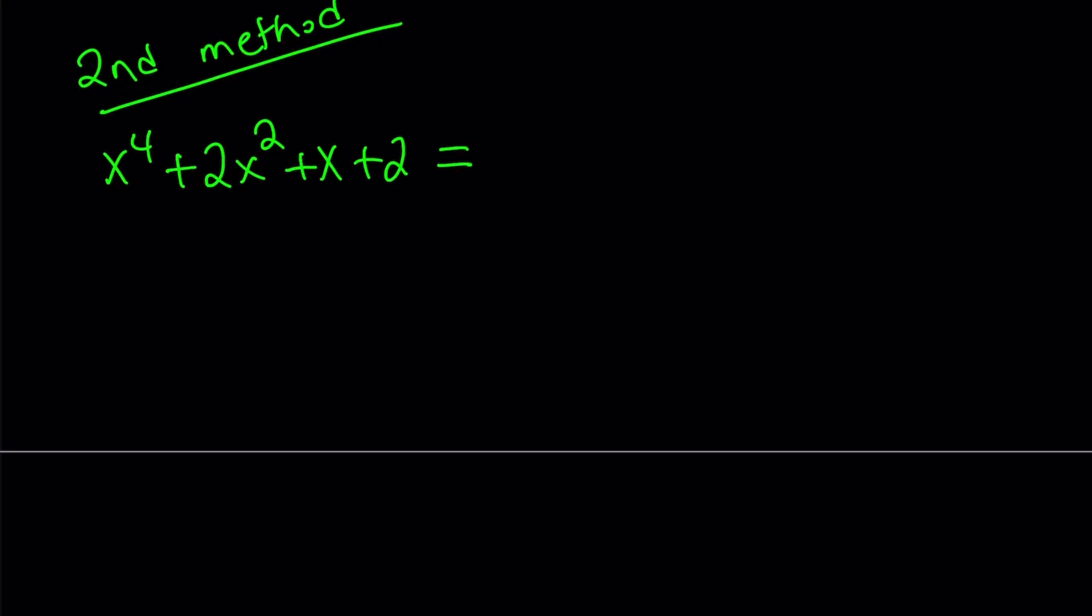Obviously, the second method is different. And it involves, of course, the same idea here. We want to factor this. But, how can I factor it without manipulating like that in the first method? Well, here's what I can do.